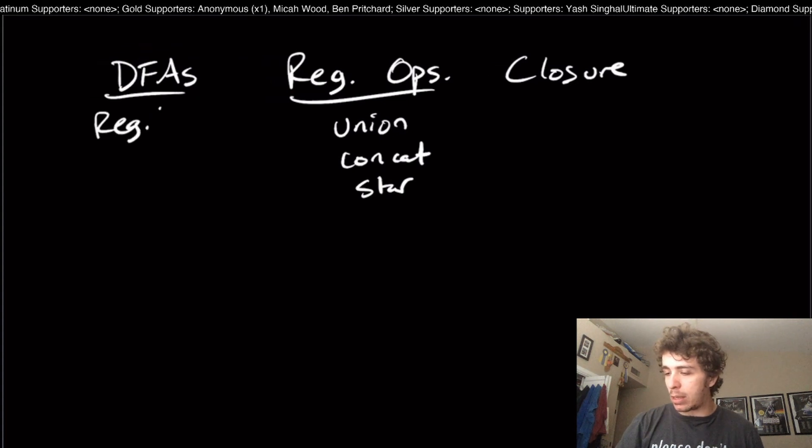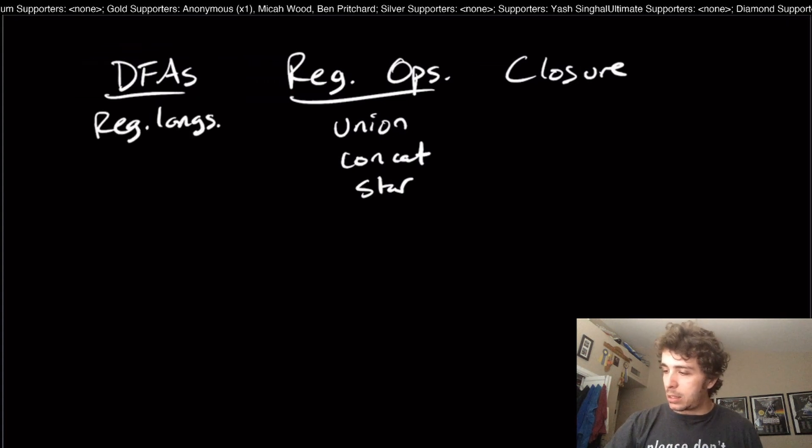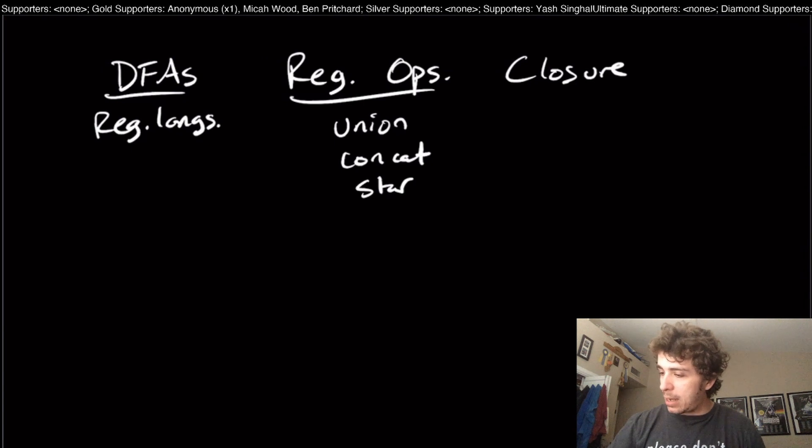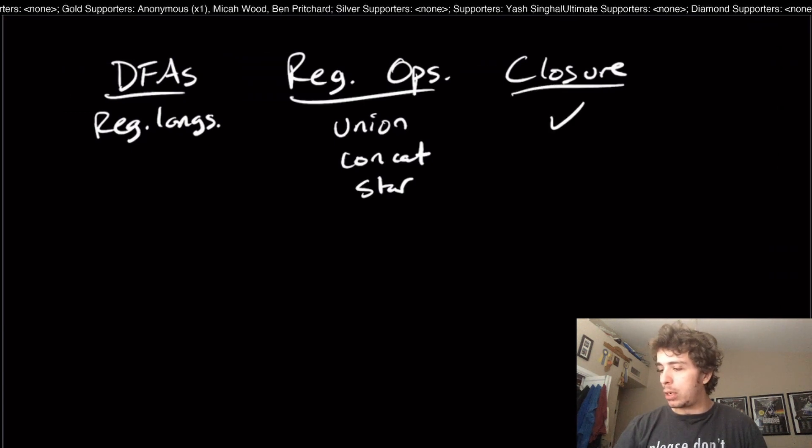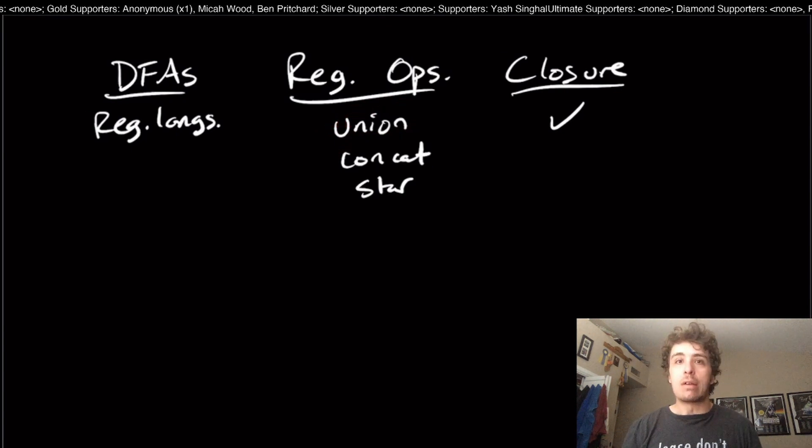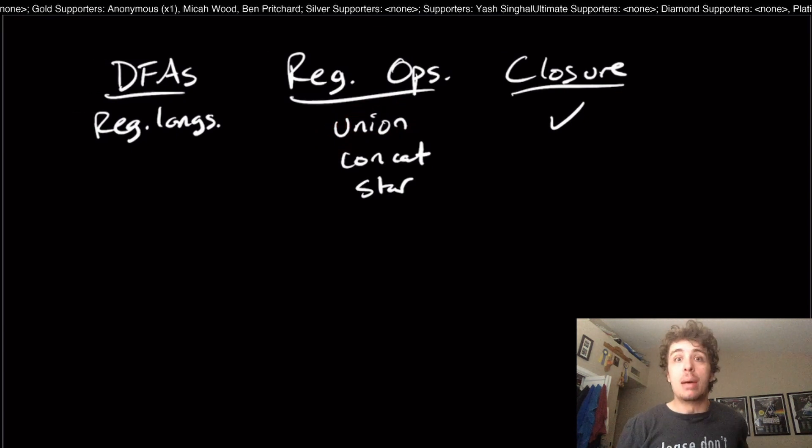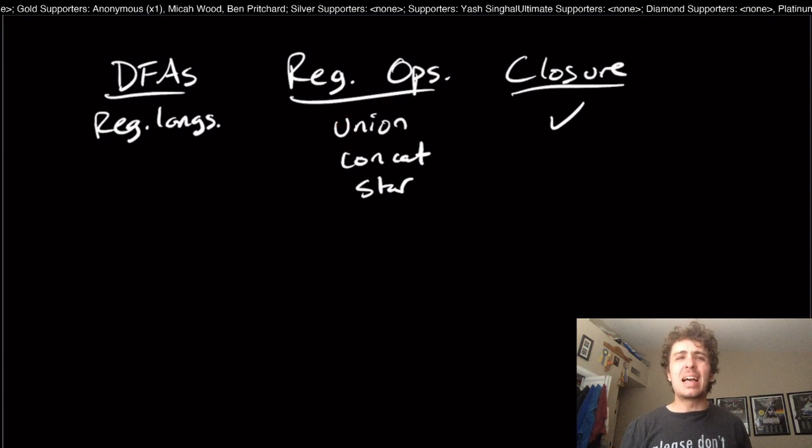We were able to show closure properties of the regular languages for DFAs. DFAs correspond to regular languages, and we were able to show that for union, at least, we were able to get closure under union for regular languages due to the product construction.